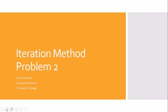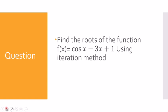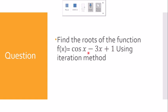Today we will be dealing with iteration method problem 2. We are asked to find the roots of the function f(x) = cos x - 3x + 1 using the iteration method. It is clear from the question that this function involves trigonometric terms, so the function is clearly a transcendental equation, and we have to find out the roots of this transcendental equation.